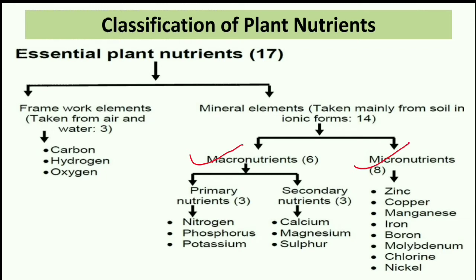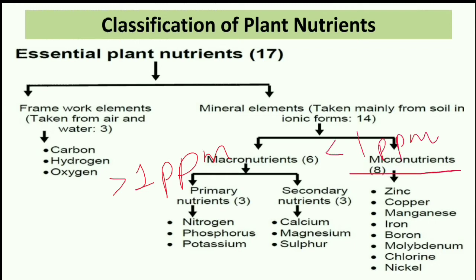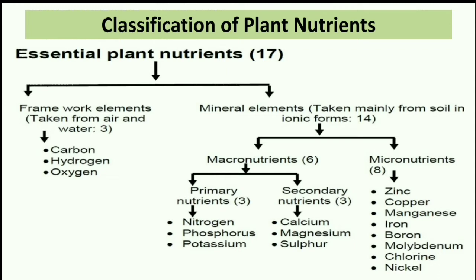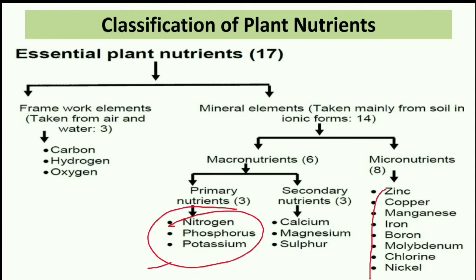Macronutrients are required in more than 1 ppm, and micronutrients are required in less than 1 ppm — they are also called trace elements. Now, within macronutrients, there are primary nutrients and secondary nutrients. Primary nutrients are NPK — that is nitrogen, phosphorus and potassium. Secondary nutrients are calcium, magnesium and sulfur. In this video we mainly discuss NPK.